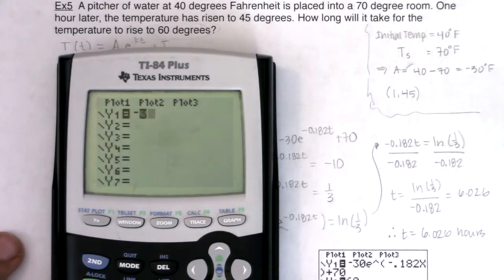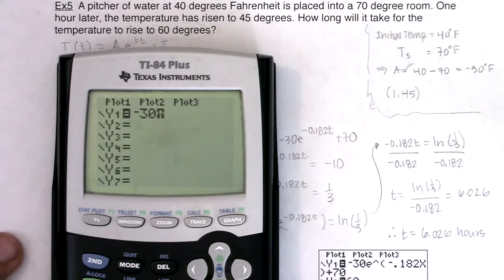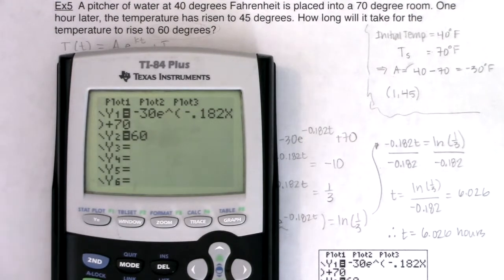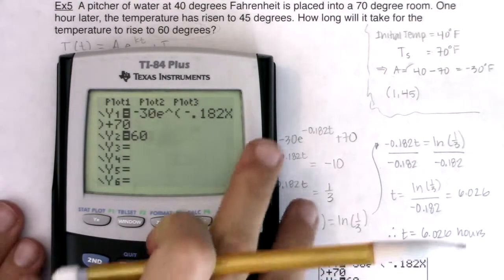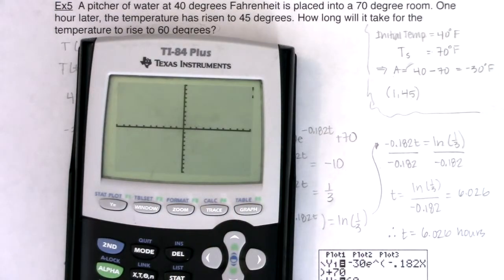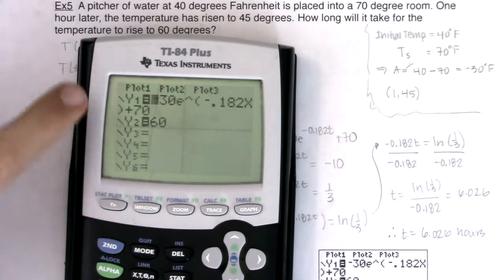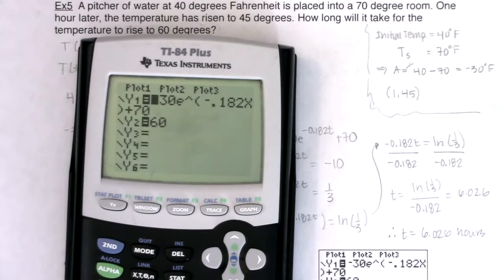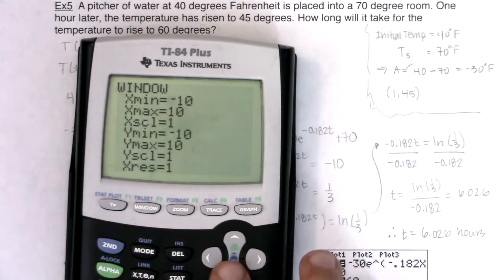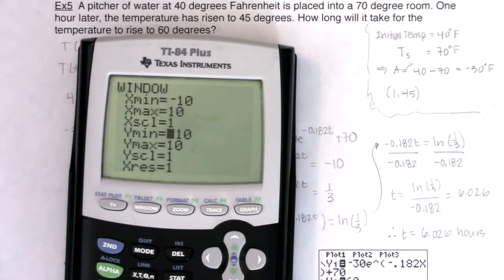We can enter in Newton's law of cooling for this problem. It was negative 30 E to the negative 0.182 T plus 70. I can set that equal to 60. And since we're just doing a regular math problem, I would start with saying, we'll hit zoom six, but this window is so not going to be what you want it to be. Because there's no, I can't even see 60. I know I actually started up at 70. So let me adjust my y values. Let me at least, excuse me, I'll go zero to a hundred and I'll go by tens.